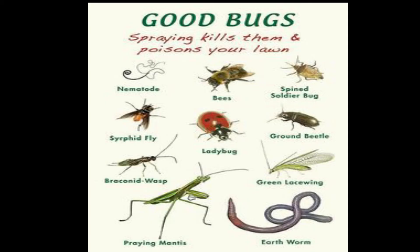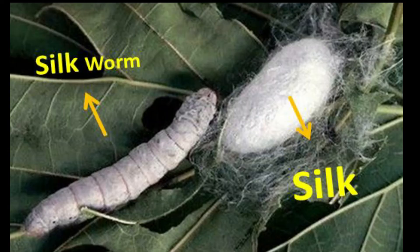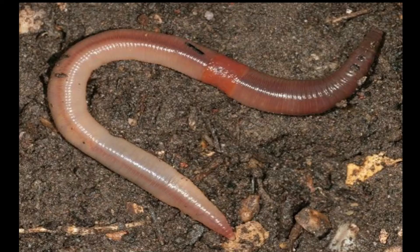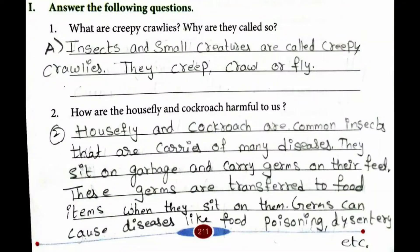Now let us learn about useful insects. Some insects are very useful for us in many ways. Honey bees give us honey. Silk worms give us silk. Earthworms make the soil fertile and are also called the farmer's friend. Butterflies help in pollination of flowers.